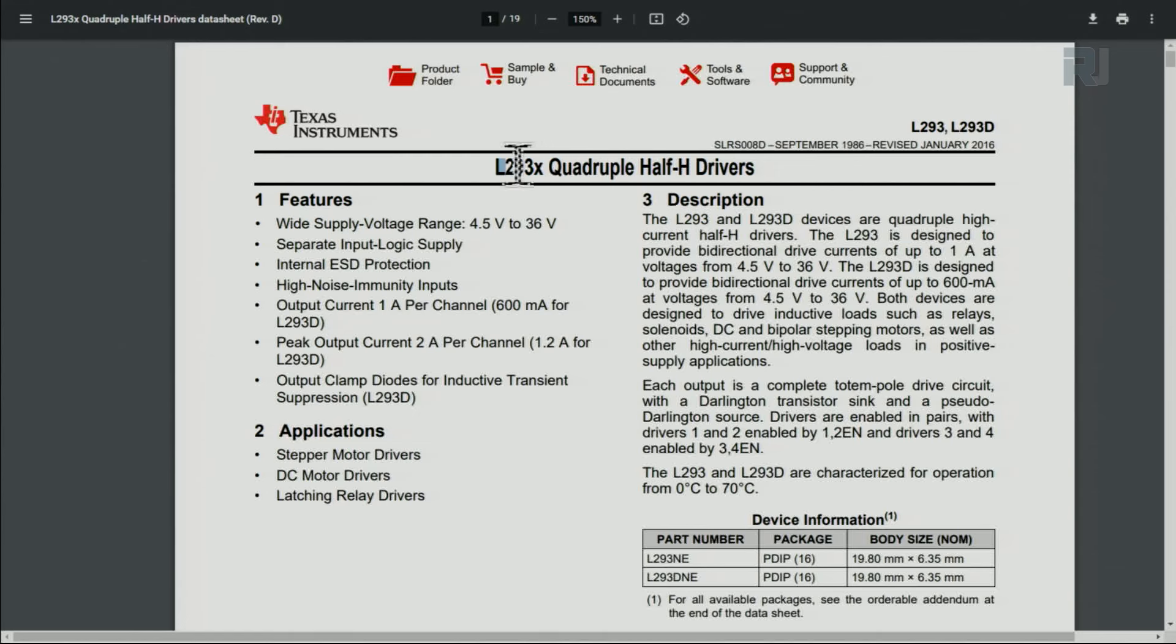Here is a datasheet for L293 and L293D. This is a quadruple half H bridge, so what it means is one chip or one IC can control two motors fully or four motors in one direction, which will be half bridge.